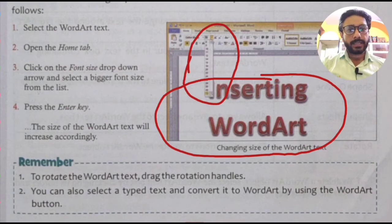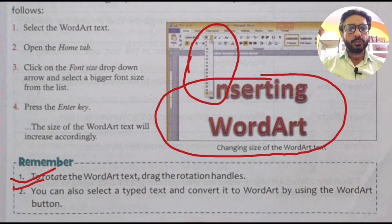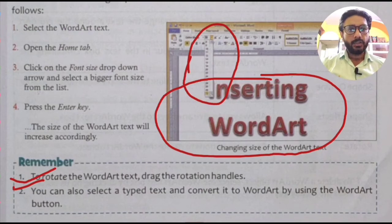To rotate the Word Art text, drag the rotation handle. You can also select existing typed text and convert it to Word Art by using the Word Art button. Select the text, then select the Word Art option and choose a style, and the text will automatically convert to Word Art.